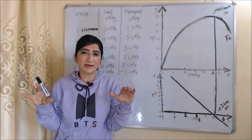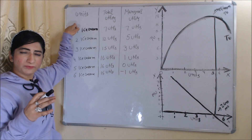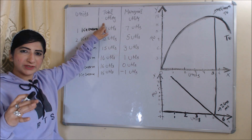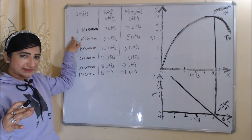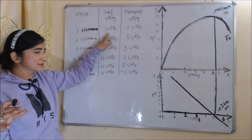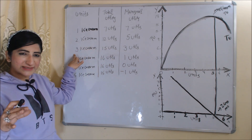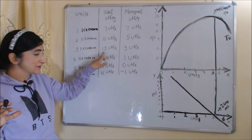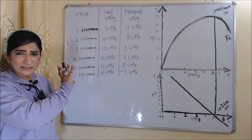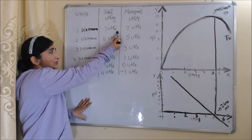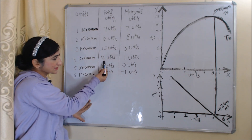Now we will see the table and diagram of total utility and marginal utility. In the first column we have units of ice cream, second column total utility, third column marginal utility. At 1 ice cream, total utility is 7 utils. At 2 ice creams, 12 utils. At 3 ice creams, 15 utils. At 4 ice creams, 16 utils. Initially total utility is increasing — 7, 12, 15 — then it becomes maximum at 16, and finally it starts reducing.